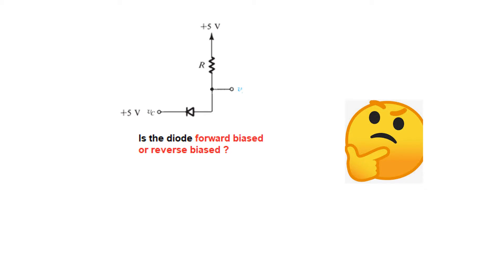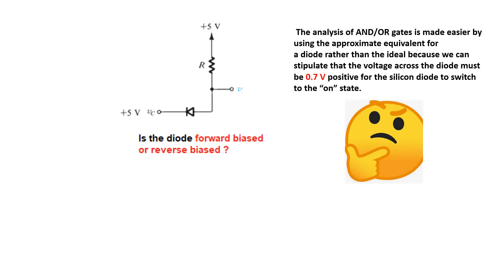there has to be 0.7V more on the anode side for the diode to conduct. But in the case of an ideal diode, since there is no barrier potential, therefore even if the voltages are equal on both sides, the diode will become forward biased.